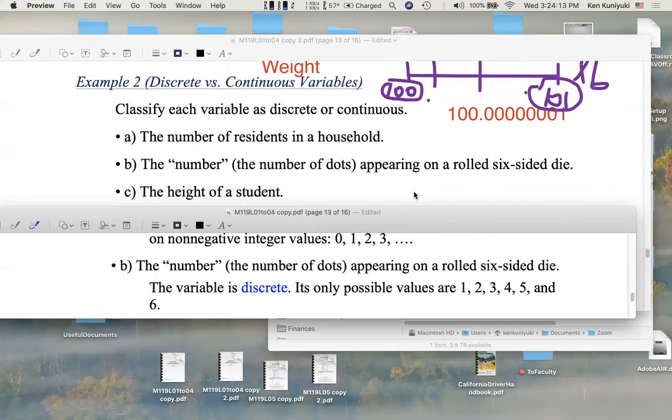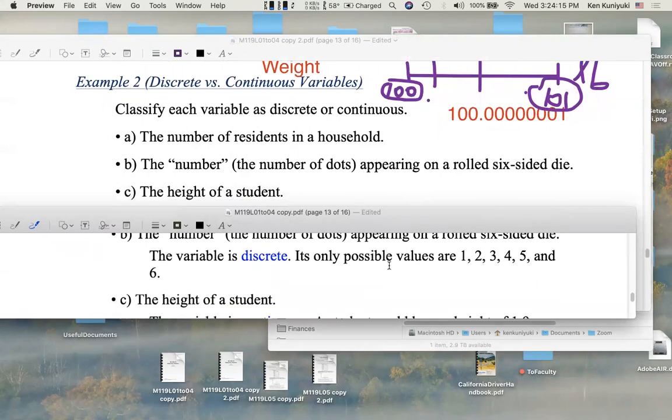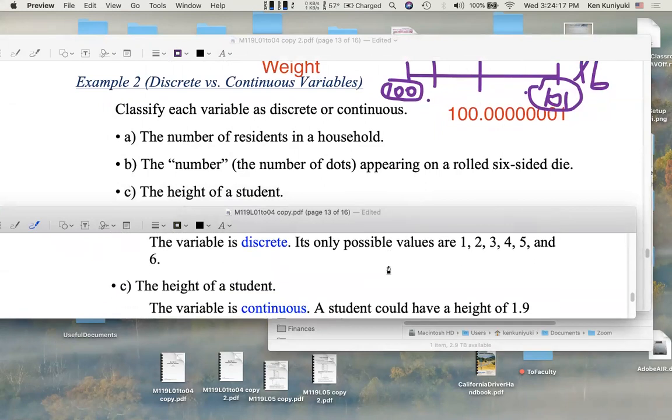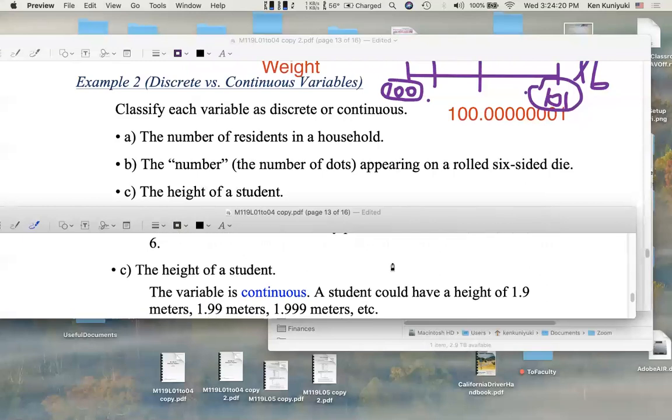C, the height of a student. Well, like weight, that's going to be continuous. A student could have a height of, say, 1.9 meters, 1.99 meters, 1.999 meters. It's like limits in calculus. Continuous. The possible values can vary smoothly.